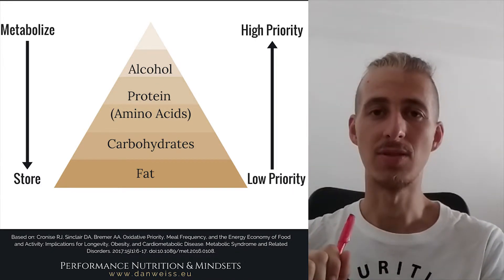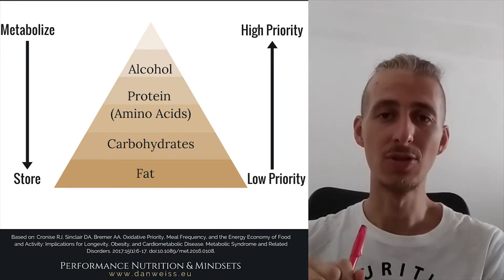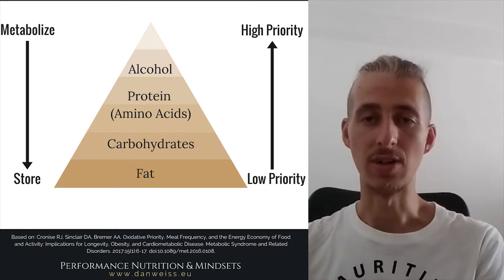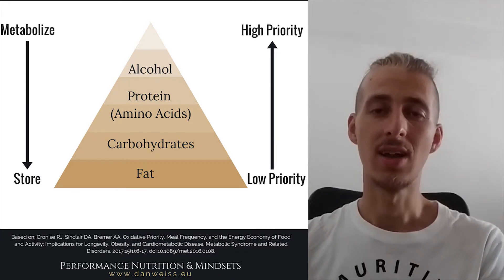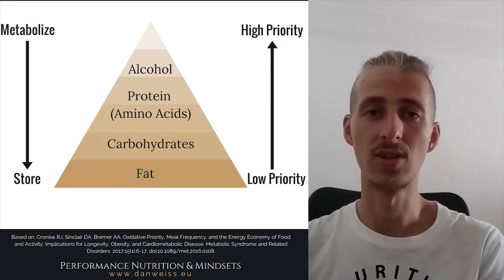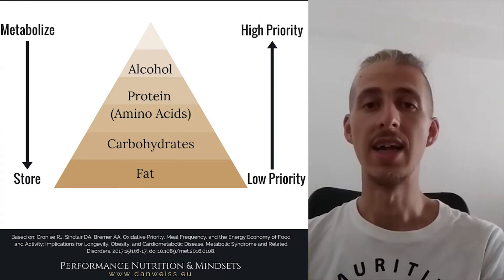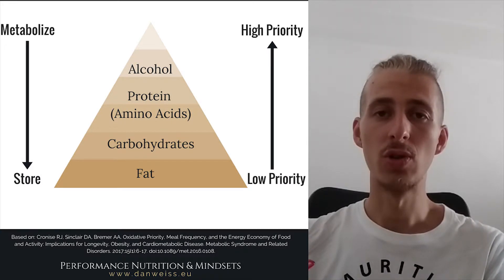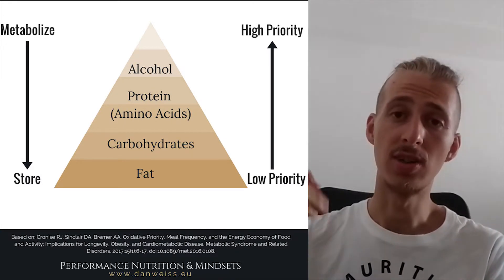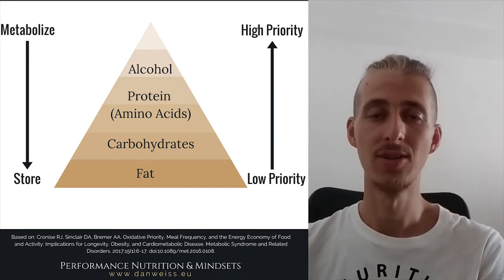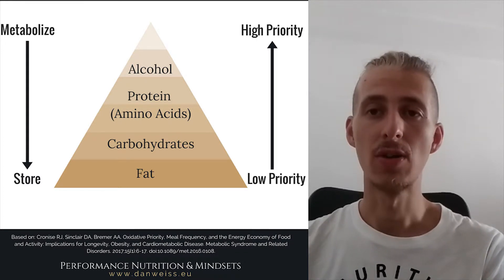However, anything that comes with the alcohol is automatically going to be stored as energy. For example, a glass of wine is not only pure alcohol — there is also water and sugars or carbohydrates in the form of simple sugars that come from grapes. These are turned into glucose, and if your glucose storage is full then they are turned into fatty acids and stored. So there we have alcohol.